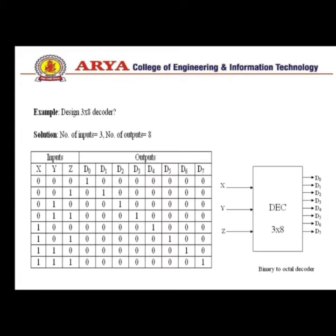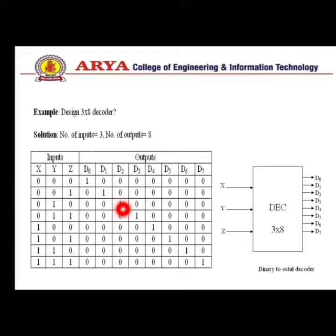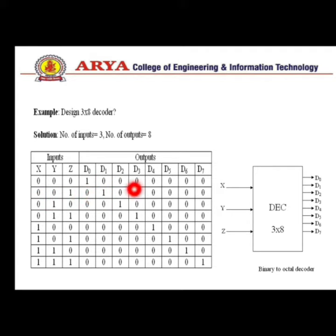Next is the 3-to-8 decoder. The 3-to-8 decoder has three inputs X, Y, Z and eight output lines D0 to D7. Based on three inputs, one of the eight outputs is selected. The number of inputs is 3, so the maximum possible conditions are 8, with values from 000 to 111. Each output represents one minterm of the three input variables. D0 equals X-bar·Y-bar·Z-bar, D1 equals X-bar·Y-bar·Z, and so on.